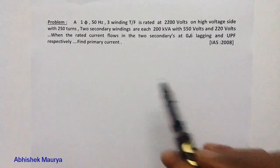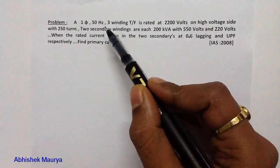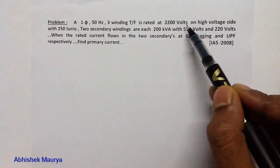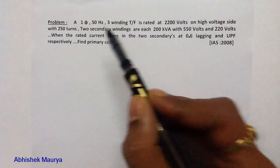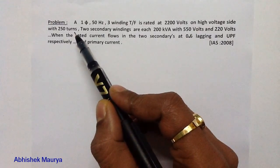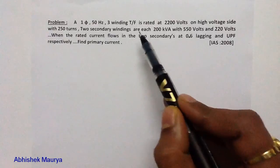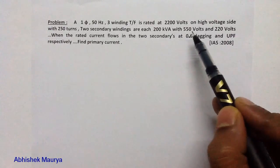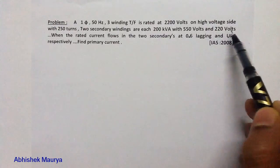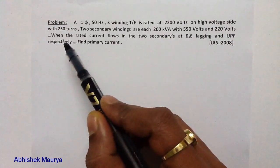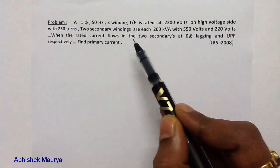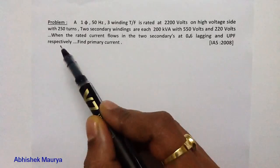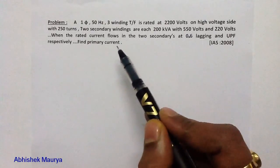Let me first read this problem. A single phase 50 Hz 3-winding transformer is rated at 2200 volts on the high voltage side with 250 turns. Two secondary windings are each 200 kVA with 550 volts and 220 volts. When the rated current flows in the two secondaries at 0.6 lagging and unity power factor respectively, find the primary current.